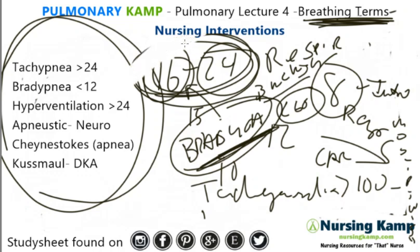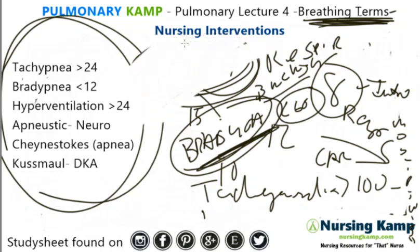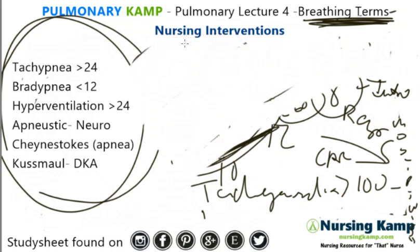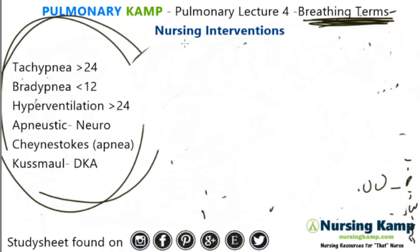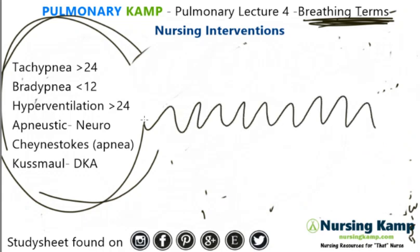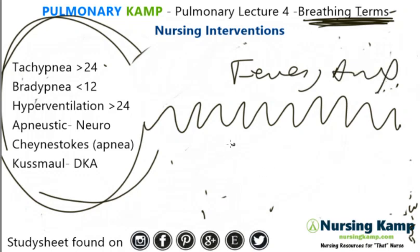Tachypnea is the first breathing term. Tachypnea is basically an increased rate of respirations — they're regular and shallow — and it's defined as greater than 24 breaths per minute. It's common in fever, anxiety, and exercise. We always look at the underlying cause of tachypnea.